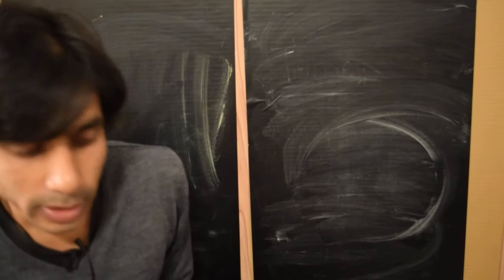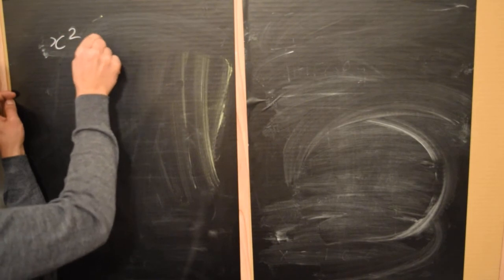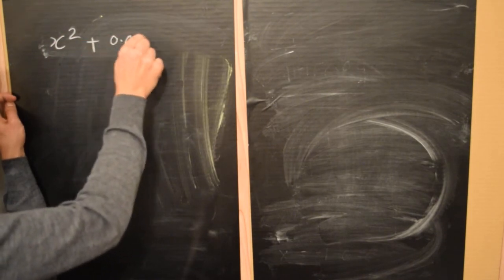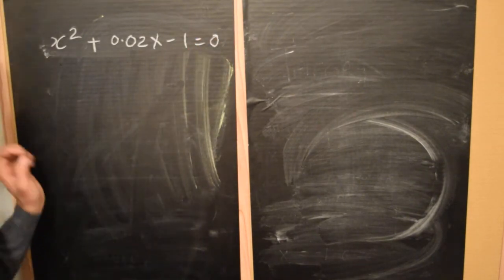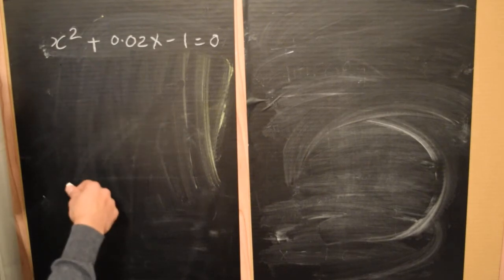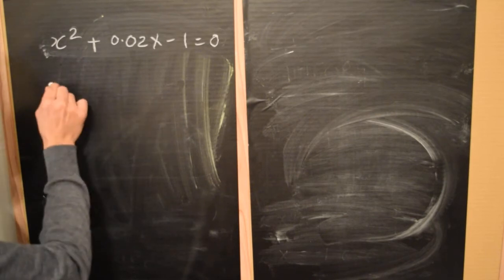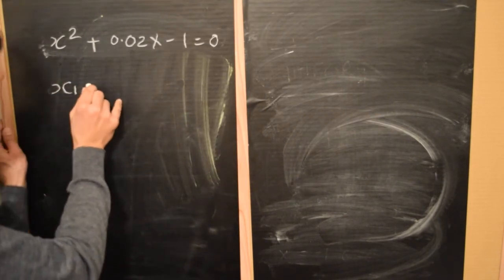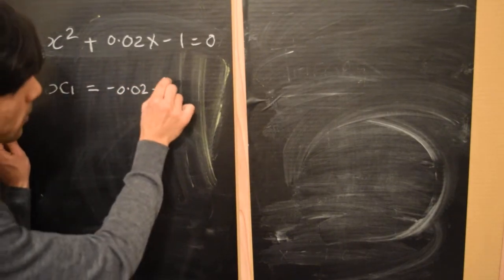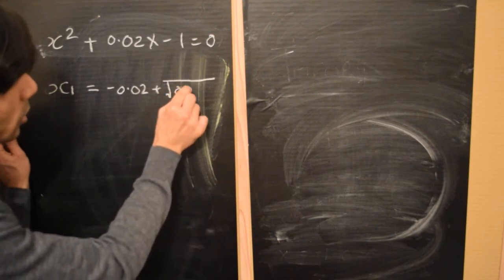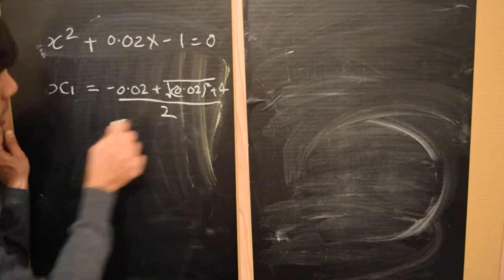So let's get started with an equation of the form x squared plus 0.02x minus 1 equals 0. This is a second order equation in the variable x and we know its roots. The roots are x1 equals minus 0.02 plus square root of 0.02 squared plus 4 divided by 2. That's the first root.